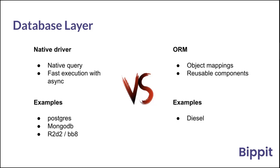I haven't looked at this recently — the last time I did was maybe a year ago — and even then async still wasn't in Diesel. I feel like they should have it right now, otherwise they're really behind. But if anyone can correct me on that, I'm happy to hear. That was our reason for going with the Postgres crate.